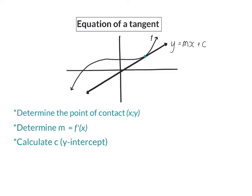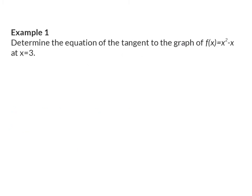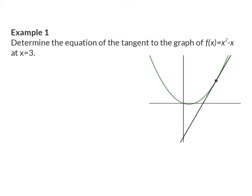Let's have a look at a few examples. Example 1: Determine the equation of the tangent to the graph of f at x is 3. This function f is a parabola, and we are asked to determine the tangent's equation at the point x is equal to 3.